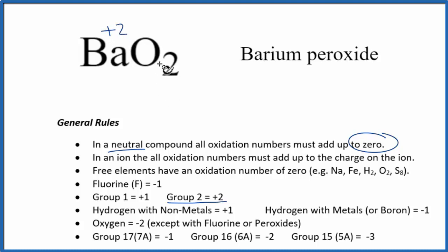Oxygen, we're used to that being minus two, but in this case we have peroxide, and peroxides are a little different. So oxygen is minus two, except when we have fluorine or the peroxides. So we can't really tell from this what the oxidation number of the oxygen is.